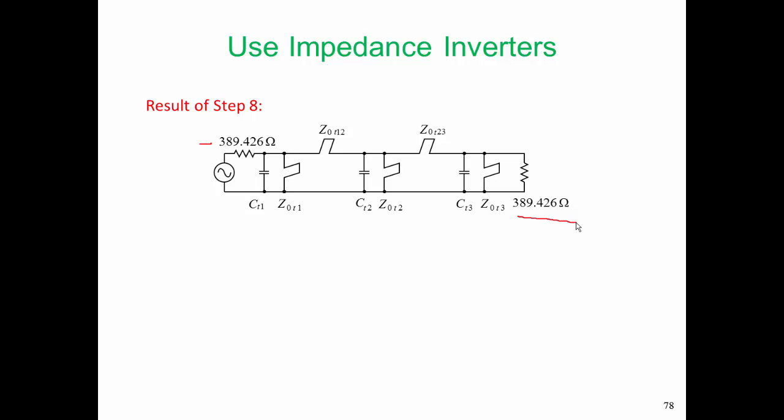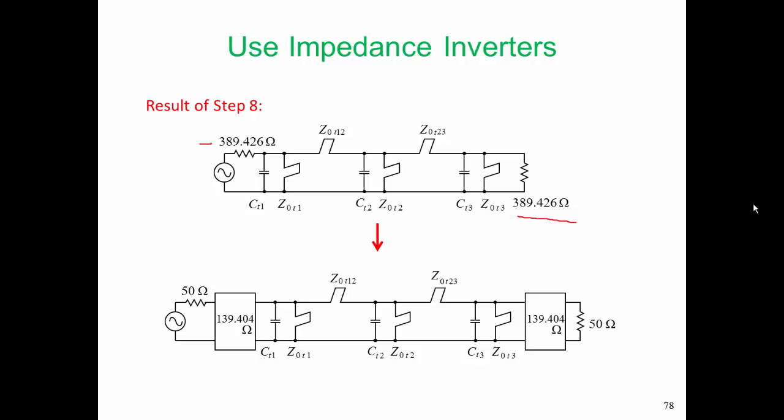A result of that scaling is that our source and load impedances were also scaled. But we want to use this in a 50-ohm system, and the solution is to introduce inverters. Yes, I know it seems as though we went to a lot of trouble to get rid of inverters, but now we have to introduce these inverters again.